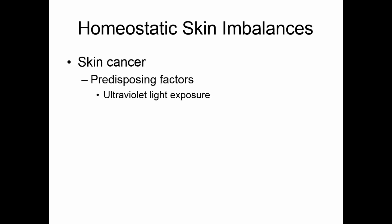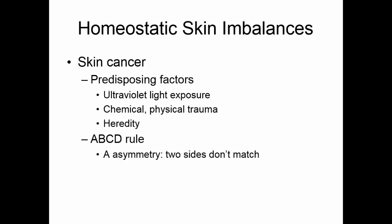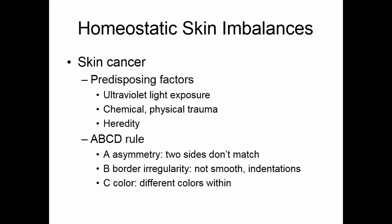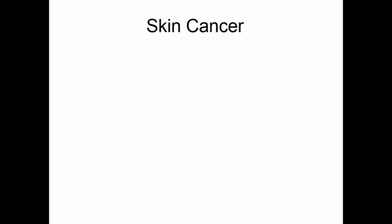Another homeostatic imbalance of the skin is skin cancer. Predisposing factors include ultraviolet light exposure, chemical or physical trauma, some infections, and heredity. When evaluating structures that might be skin cancers, you can use the ABCD rule. A is asymmetry — the two sides don't match. B is border — normal moles have smooth borders with no indentations. C is color — a uniform brown is normal, but darker spots or blues and reds can indicate a problem. D is diameter — it shouldn't be more than 6 millimeters, about the size of a pencil eraser.